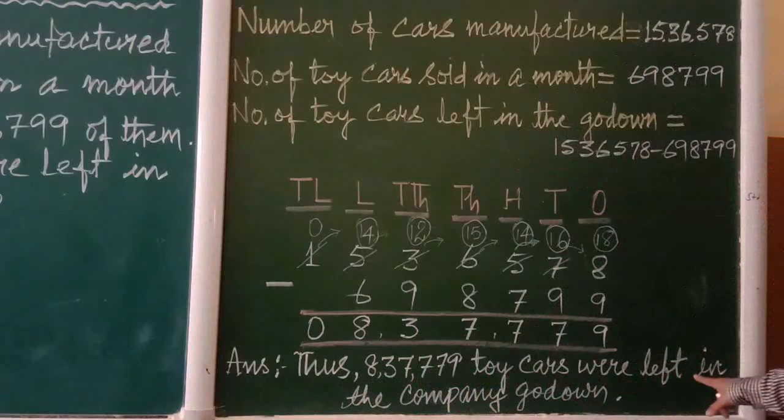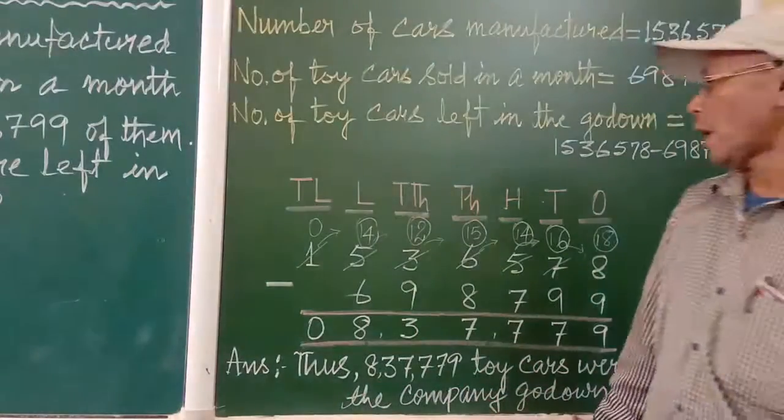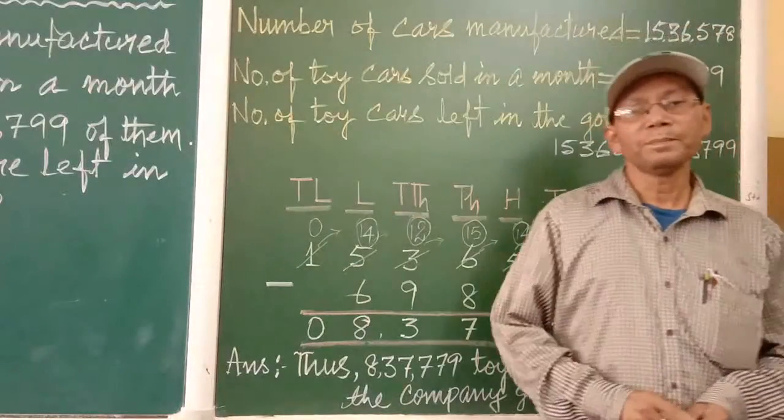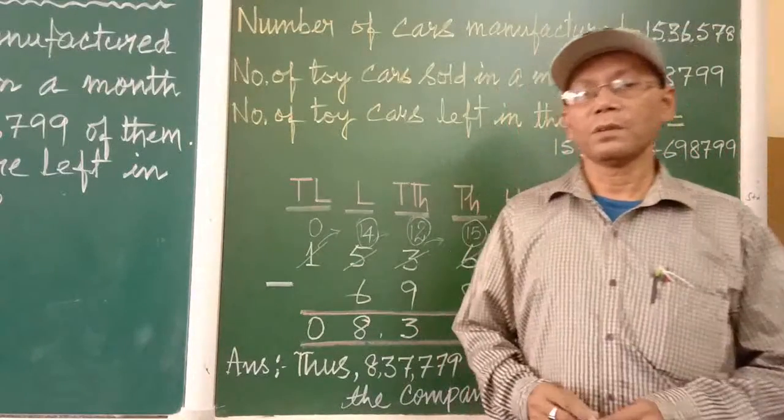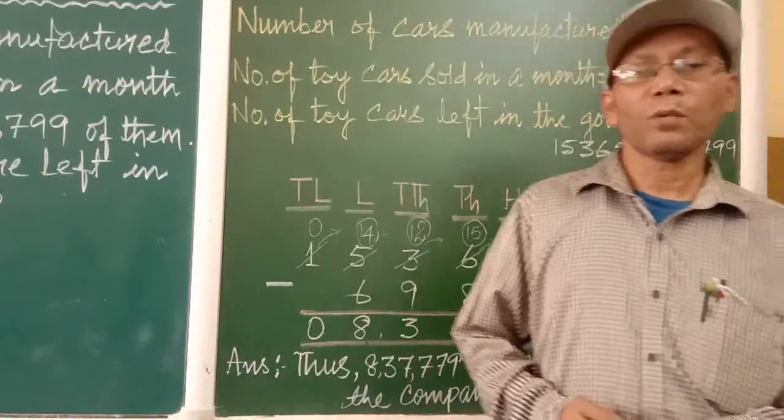Toy cars were left in the company godown. So I hope you have understood this sum. I will give you two to three sums both in the classwork. Thanks for watching.